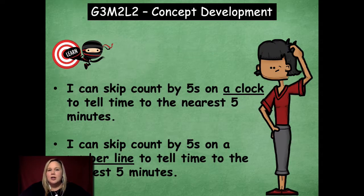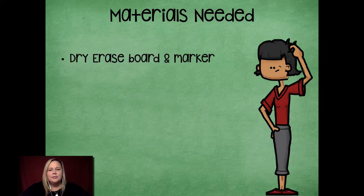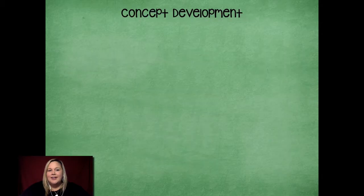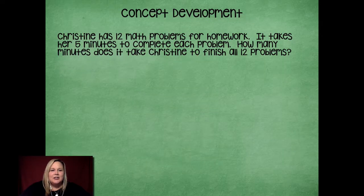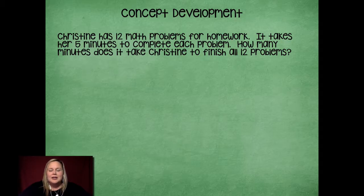Let's see what materials we need for our lesson. You're going to need a dry erase board and a marker, and then you're going to need a clock. Make sure you grab those before we get started. Okay, here we go friends. Here's our first problem. We're going to use a tape diagram to solve this problem because we've been using tape diagrams — we're pros with tape diagrams now.